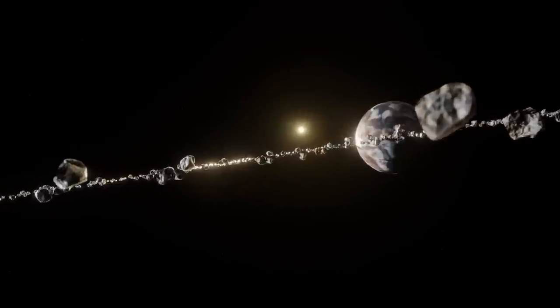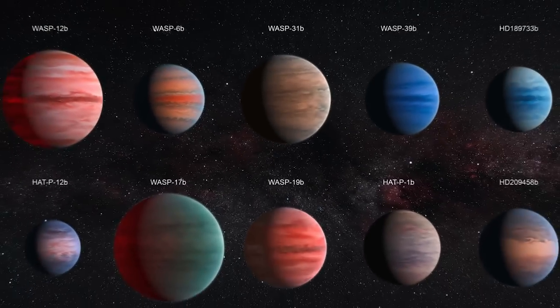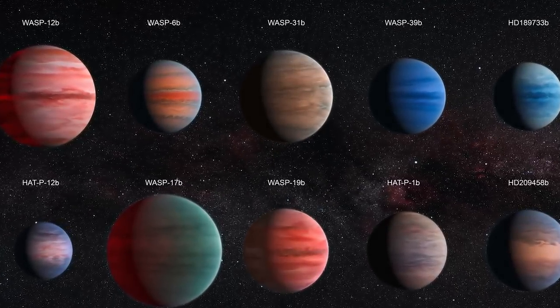WASP-39b shows that exoplanets can have very different compositions from those in our solar system, according to co-author David Singh of Exeter University. Exoplanet diversity may help comprehend planet formation and evolution.